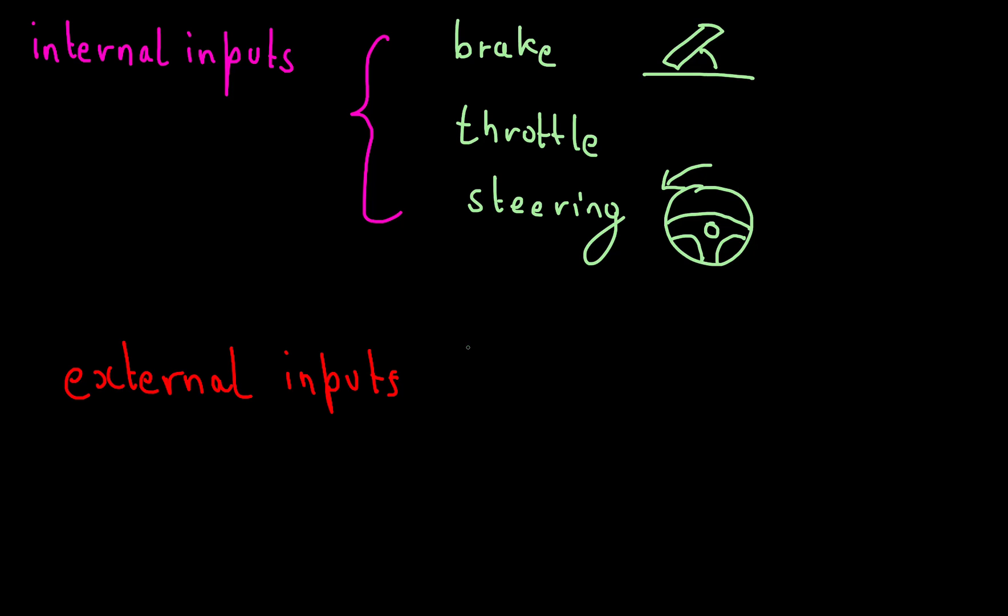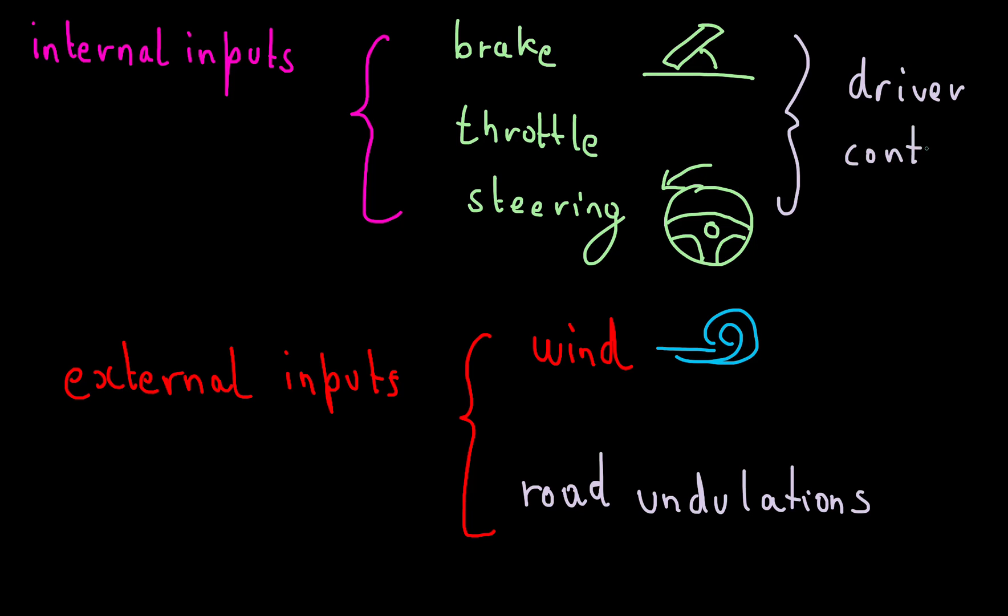What are some examples of external inputs? Wind, for example, is a great example. You might have noticed that if you're driving down a highway, and if it's particularly gusty, it becomes hard to keep your car on the road. In other words, wind acts as an external input affecting the behavior of your car. Other examples of external inputs include road undulations, which in turn include things like potholes and speed bumps.